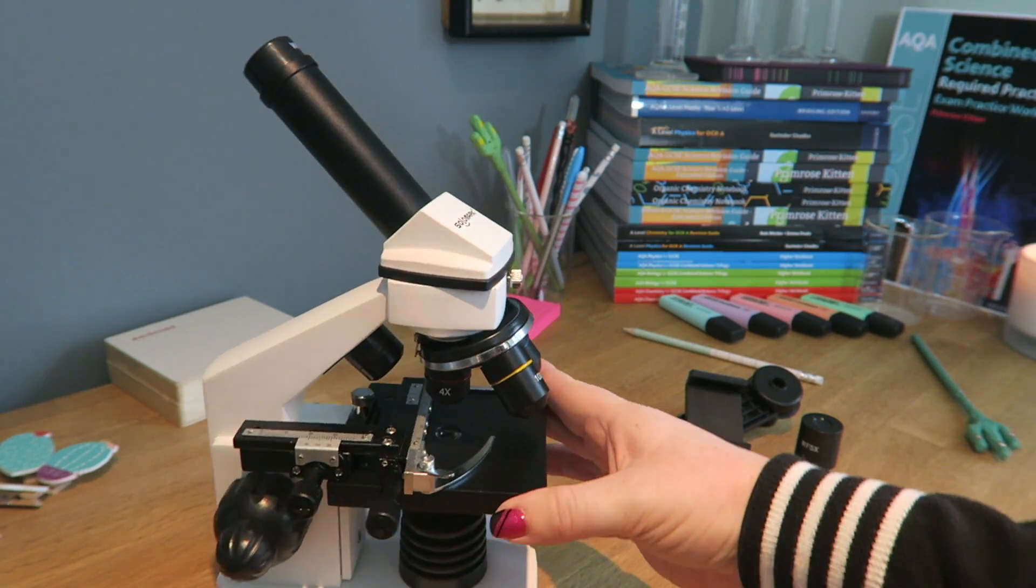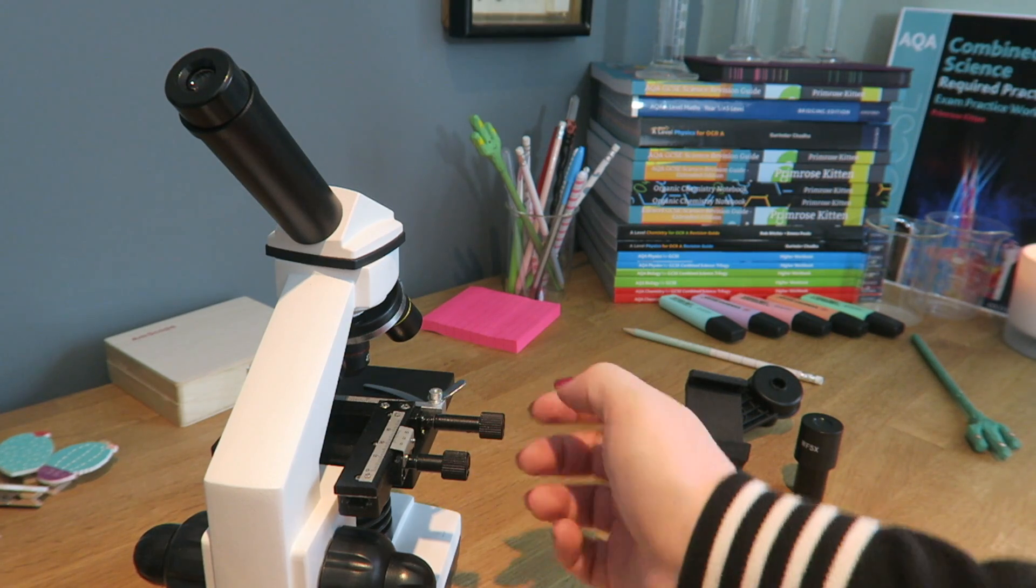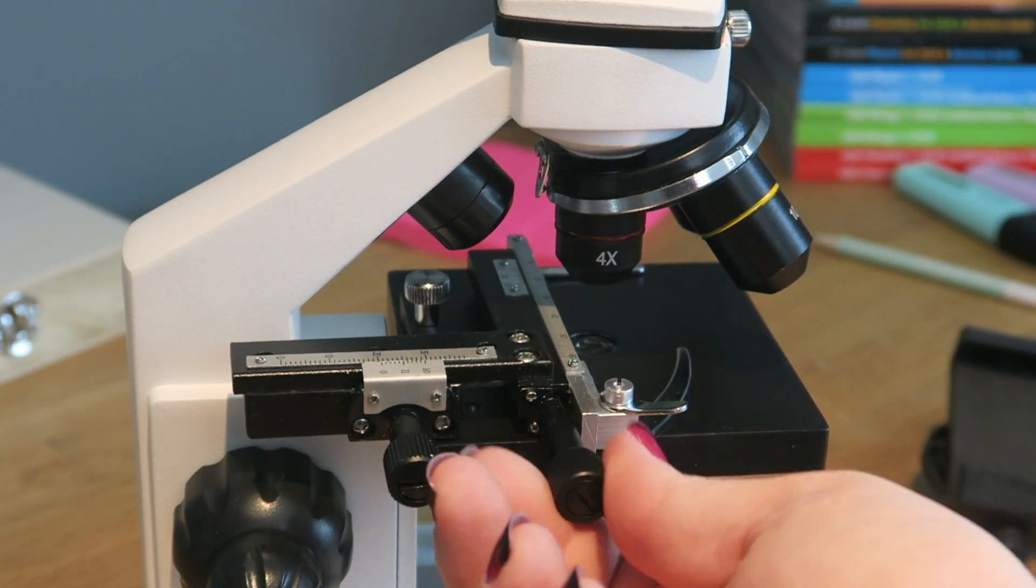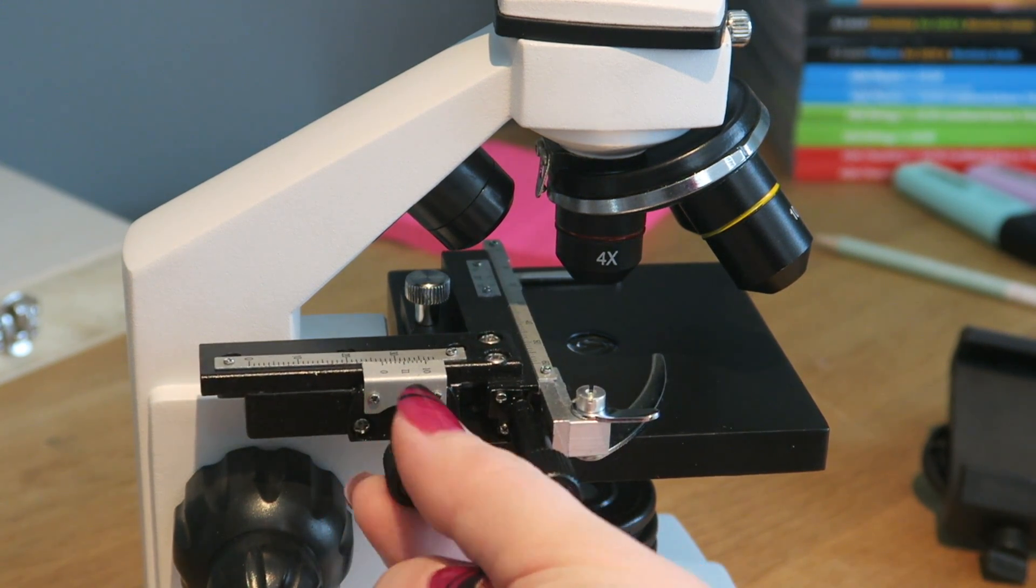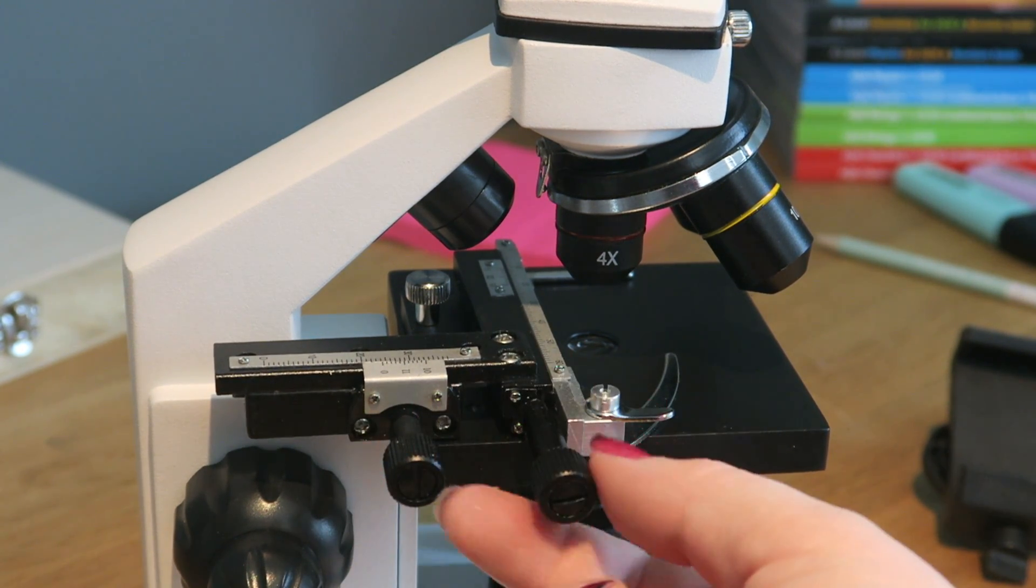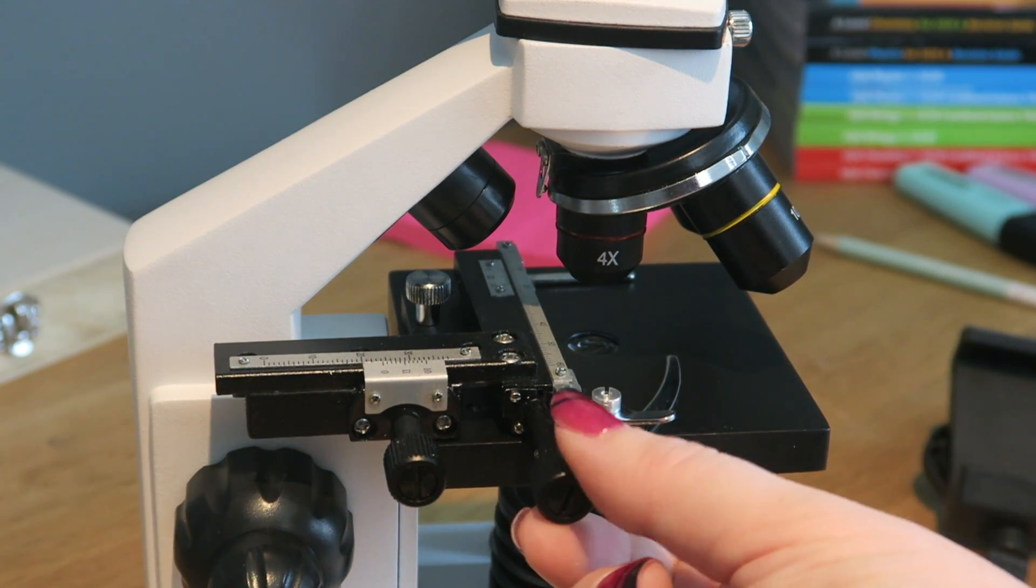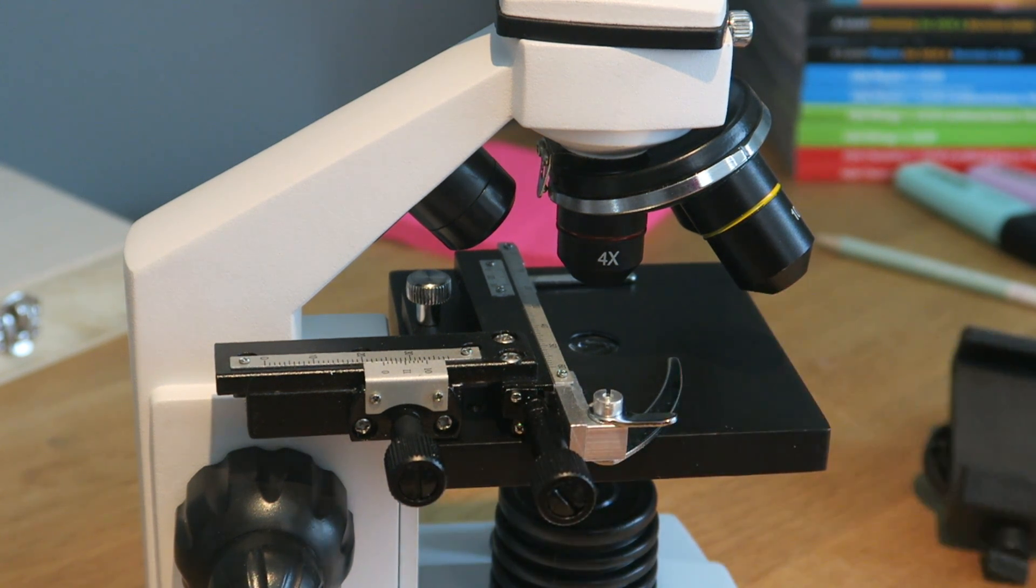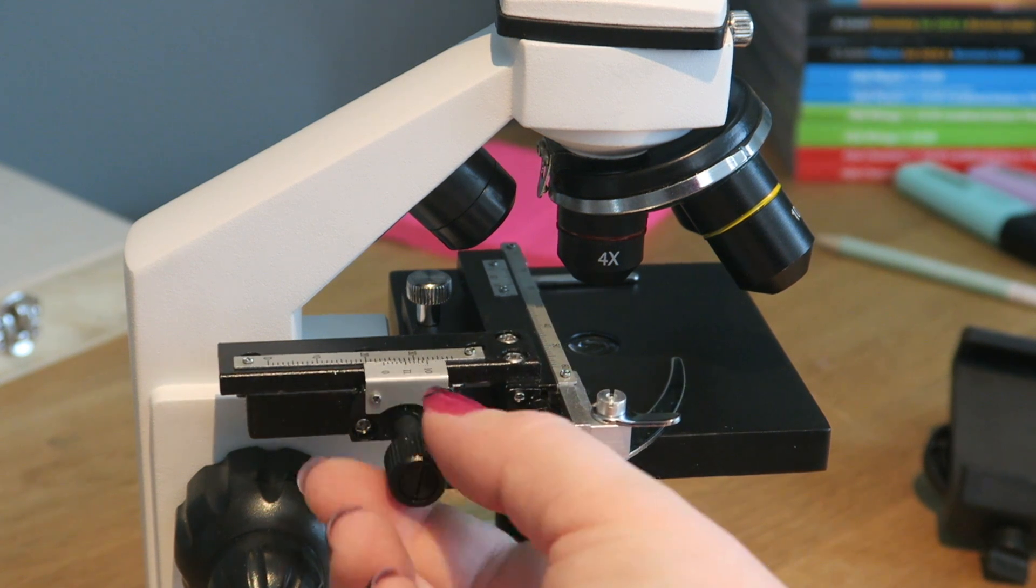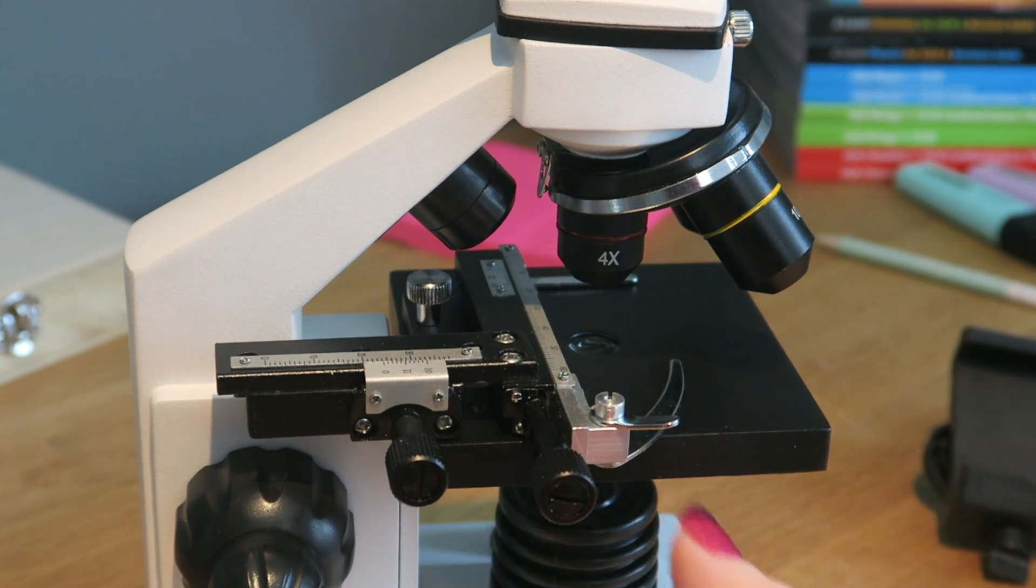These two buttons on the side here, this one and this one, will move the slide around. This one will move it from side to side, and this one will move it back and forward. Now, some microscopes, the slide won't move, but the whole stage will move. This is just to make it easier so that you don't have to touch the slide, so that you don't potentially contaminate what is there on the slide, or hurt yourself with whatever's on the slide. You can move the slide around using these knobs.